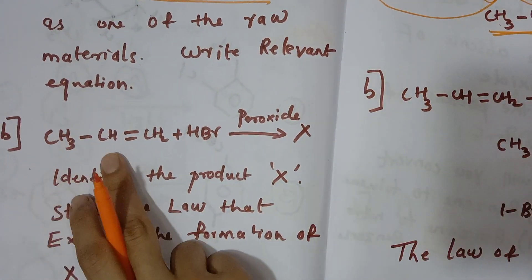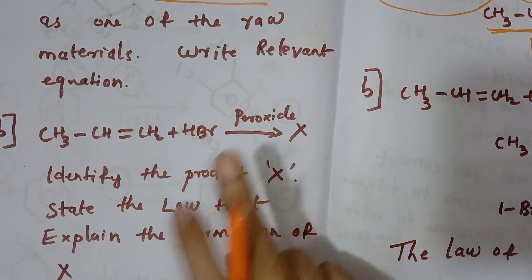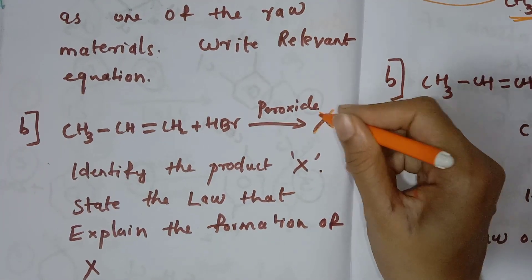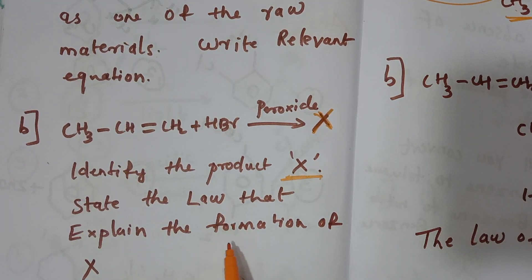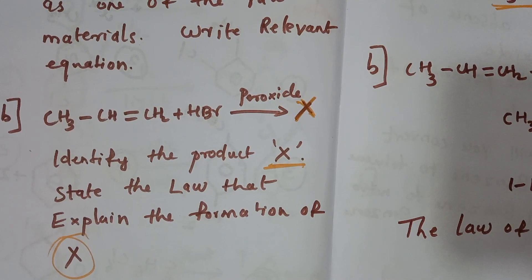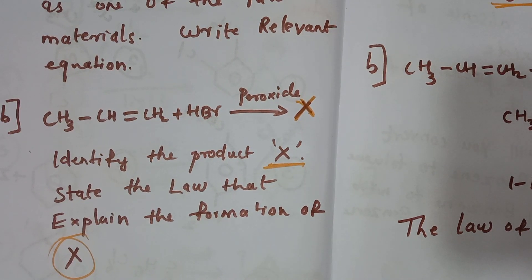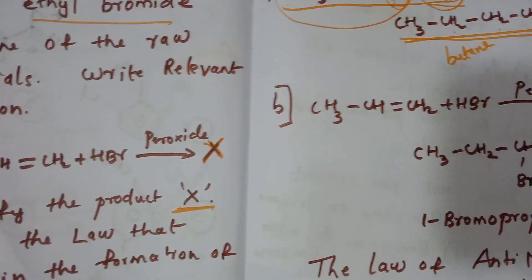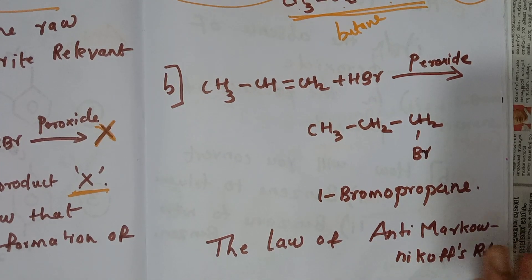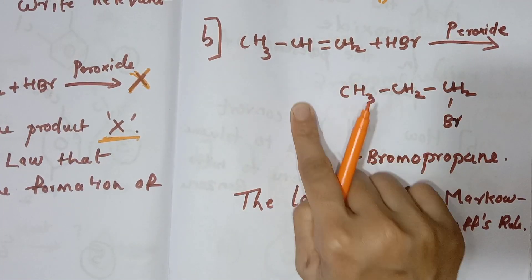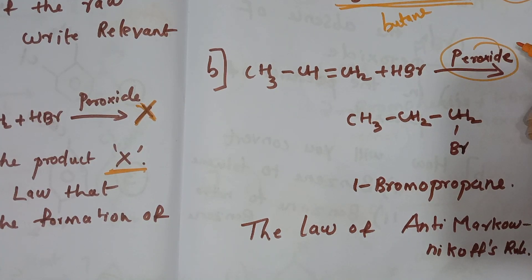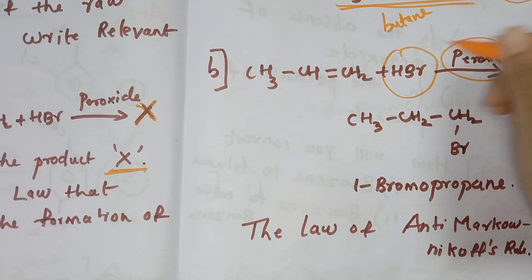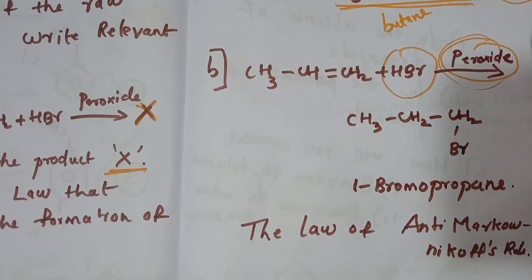The next question: CH3CH=CH2 reacts with HBr in the presence of peroxide. Identify the product X and state the law that explains the formation of X. We will apply the Anti-Markovnikov rule.